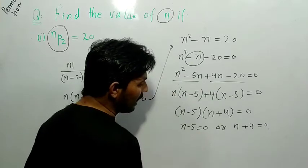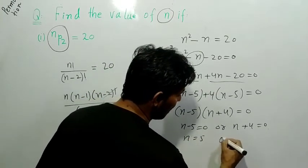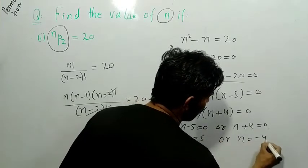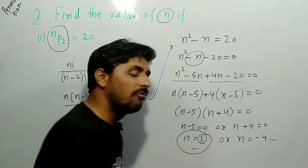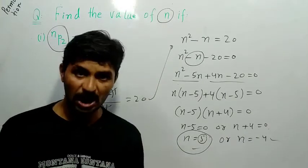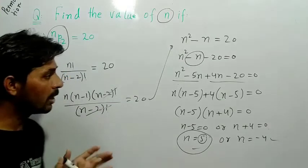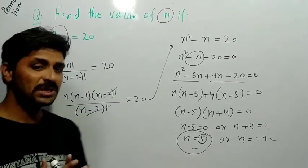Friends, one value of n we got is n equals plus 5, and the second we got is n equals minus 4. So the acceptable value is n equals 5, means n's value is 5, friends. Now friends, this problem on permutation we solved - hope you understood, friends, because this is very easy to solve, just put the values in the formula.